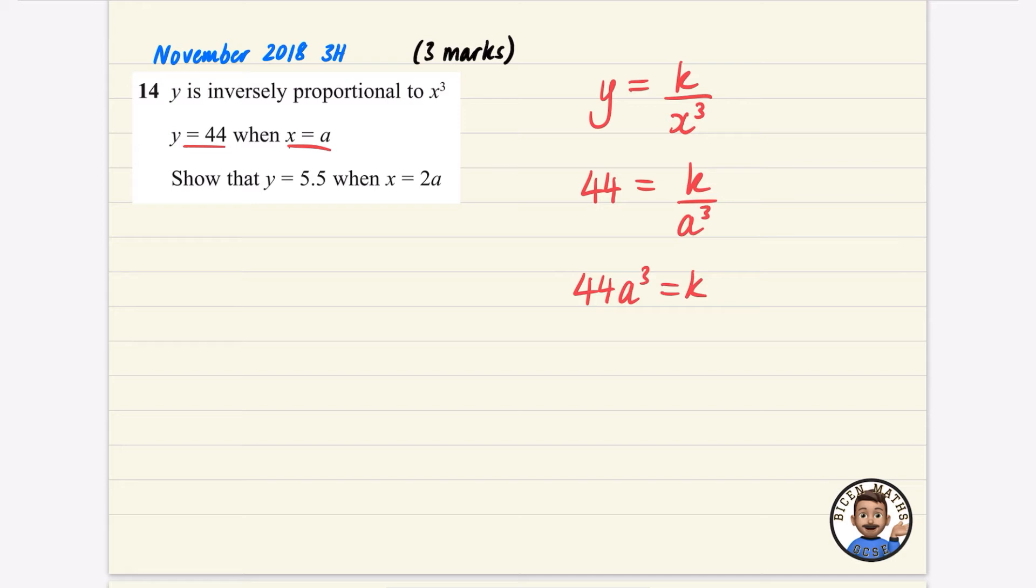Okay, so we've got the formula now. We've got what K is equal to. So I'm going to rewrite this. This is that Y equals 44A cubed divided by X cubed.